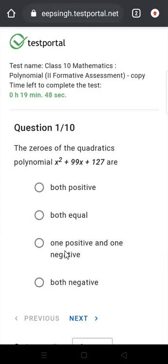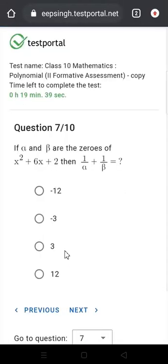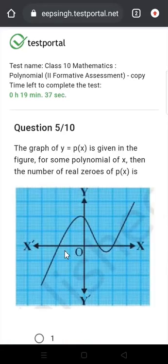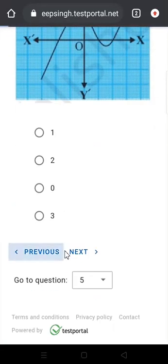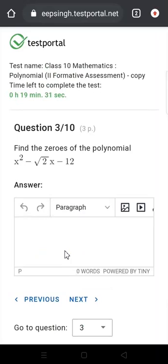For example, if I have to give this answer, I have just answered this one and then I will go to the descriptive question. So let's see at which place we will be getting the descriptive question. So this is over here, a question is given: find the zeros of the polynomial x square minus root 2x minus 12.